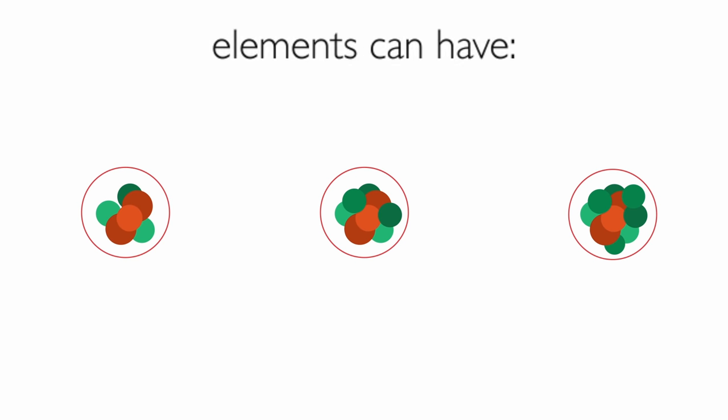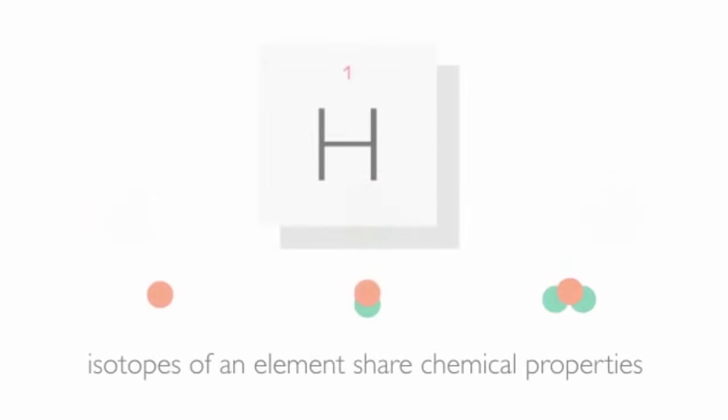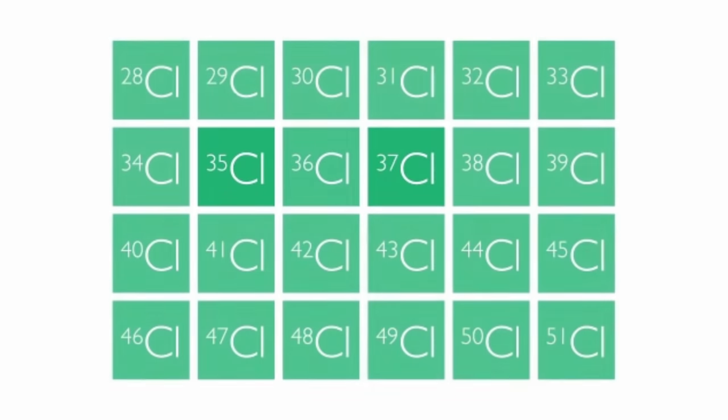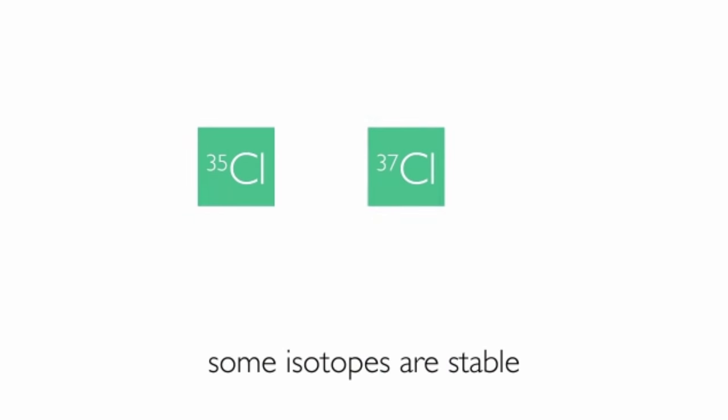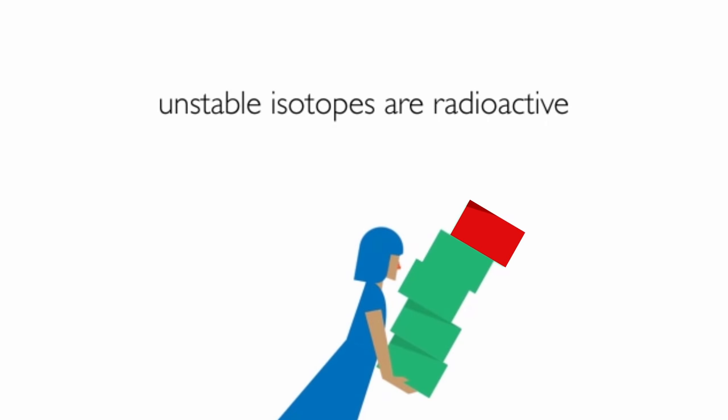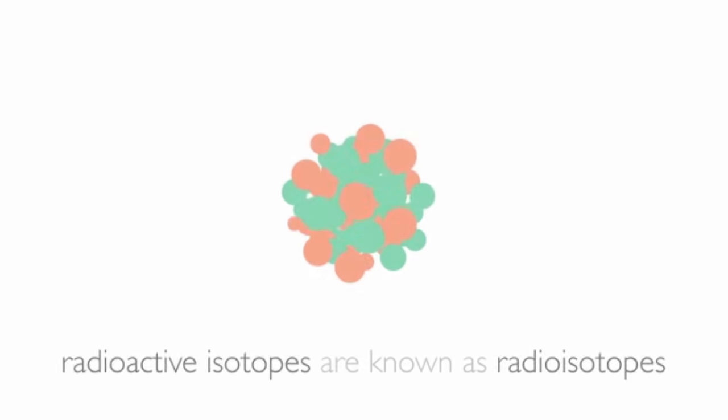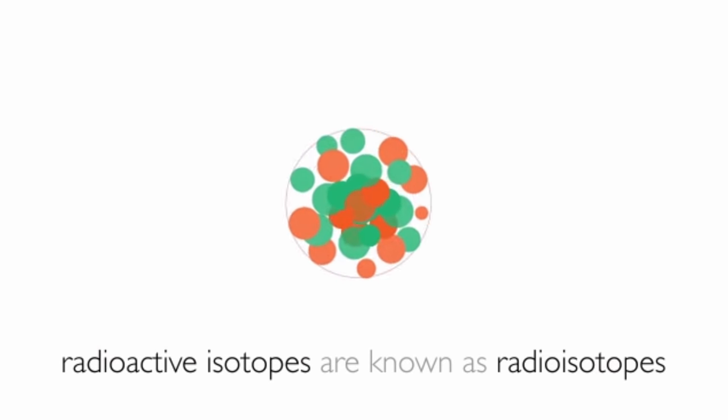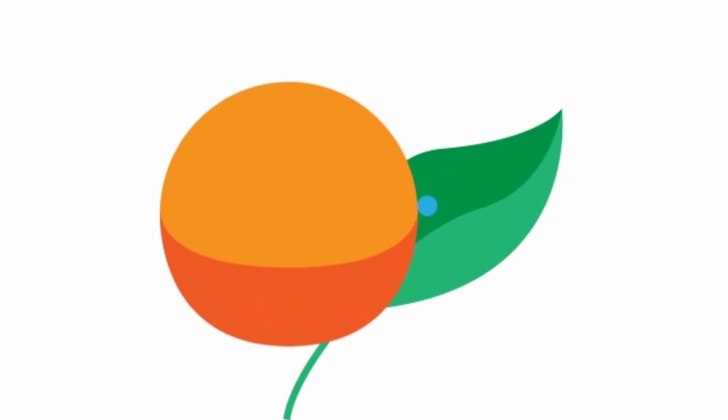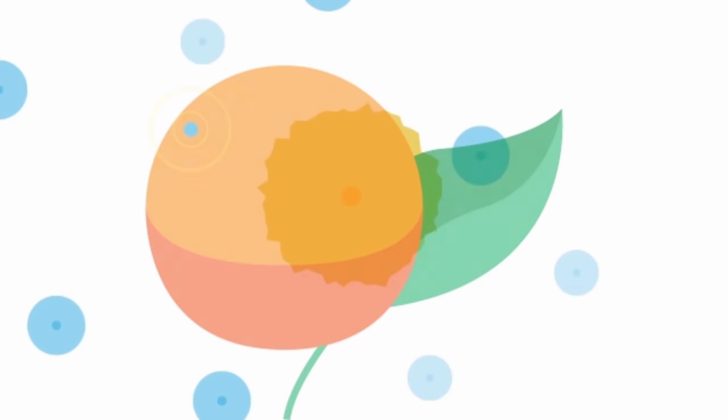Isotopes of the same element have the same chemical properties. Some isotopes are stable. Isotopes that are unstable are radioactive. Radioactive isotopes are also known as radioisotopes. Radioisotopes can be used as tracers or markers in chemistry and medicine, and they are also used to kill cancer cells.